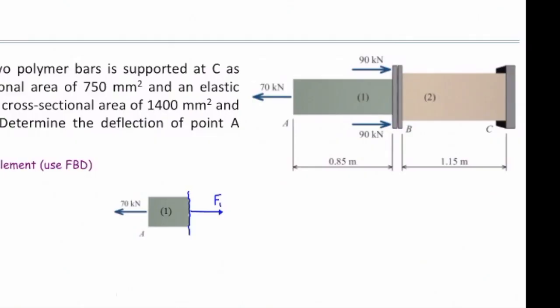A question: should I put that 90 kilonewton force in this free body diagram? No, because I'm cutting this structure between A and B, and if I consider the left part, I don't see those two 90 kilonewton forces. They are on the right part of that cut section. So I'm not going to consider that in the free body diagram. Does that make sense?